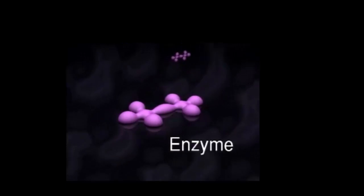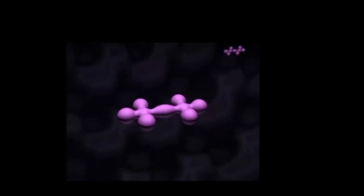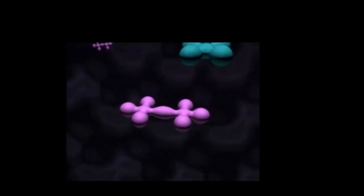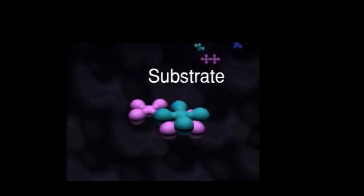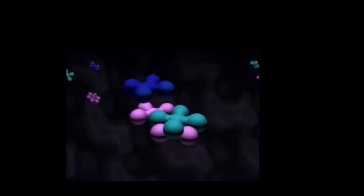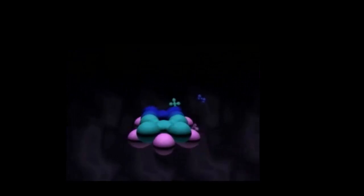Each enzyme acts on a specific molecule or set of molecules called substrates. Each substrate fits into an area of the enzyme called the active site. This fitting together is often compared to a lock and key mechanism, however the enzyme changes shape a little to fit with the substrate.